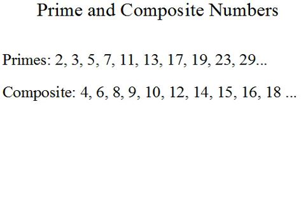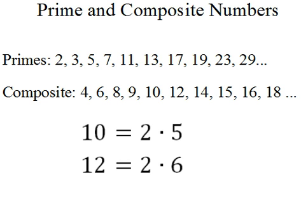Notice that all even numbers greater than 2 are composites: 4, 6, 8, 10, 12, 14, 16, 18. Why is that? Because they can always be written as a product of 2 and some other number. For example, 10 can be written as 2 times 5, and 12 can be written as 2 times 6.